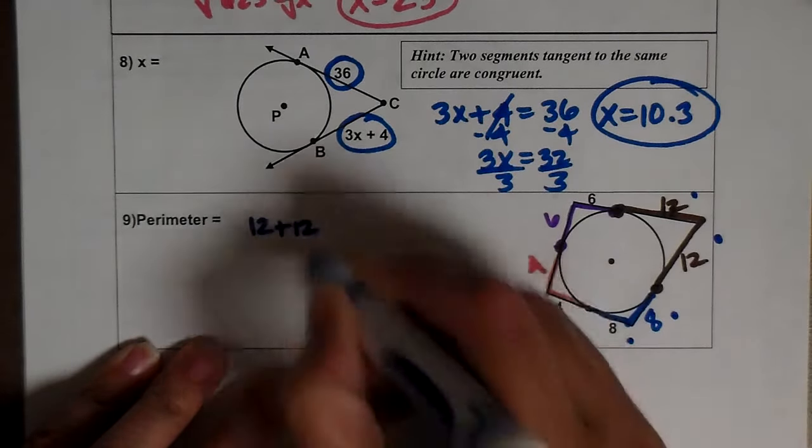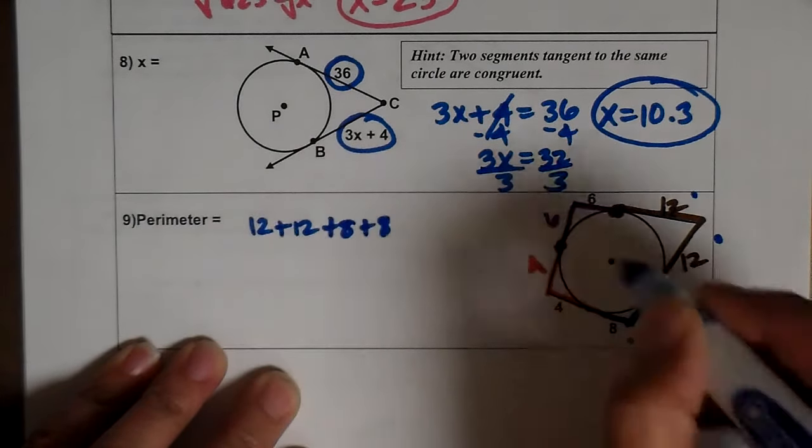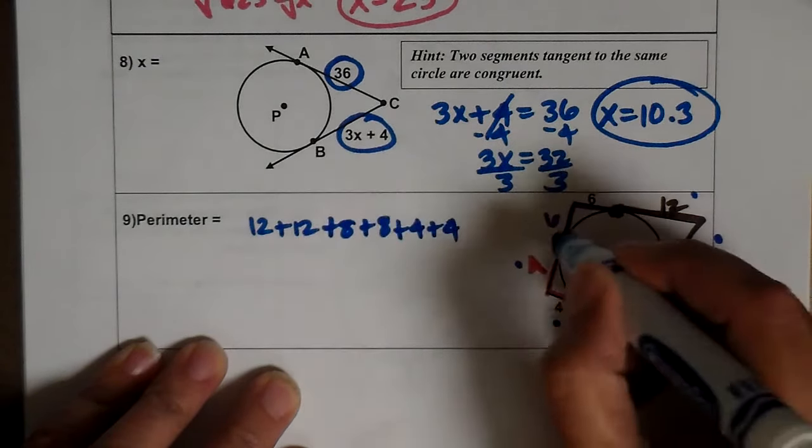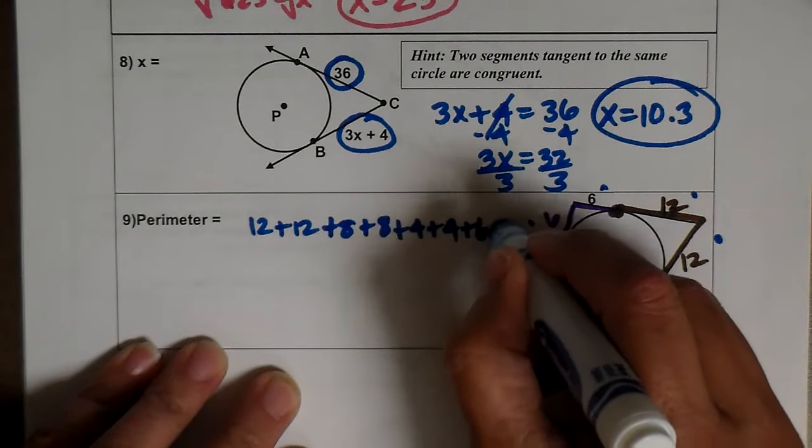I have 12 plus 12, plus 8, plus 8, plus 4, plus 4, plus 6, plus 6.